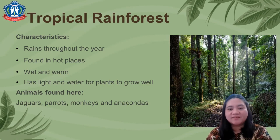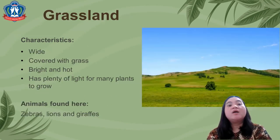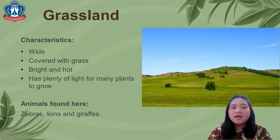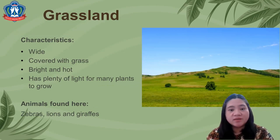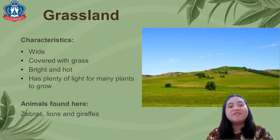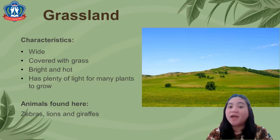Next, grassland. The characteristics are: it is mainly covered with grass, dried and hot, and has plenty of light for many plants to grow.